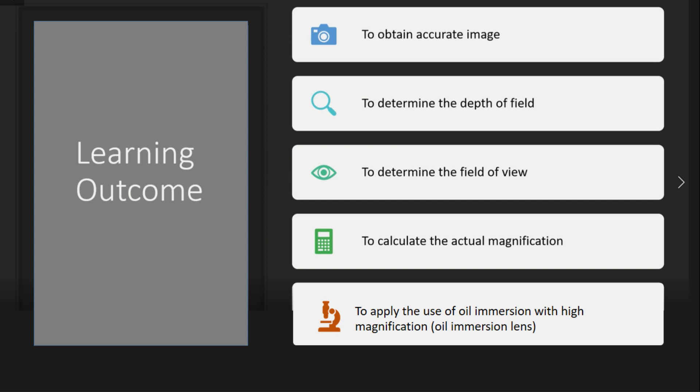We have five learning outcomes in this experiment: to obtain an accurate image, to determine the depth of field, to determine the field of view, to calculate the actual magnification, and to apply the use of oil immersion.